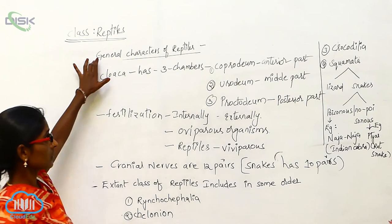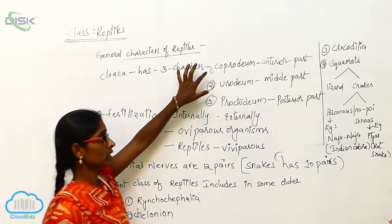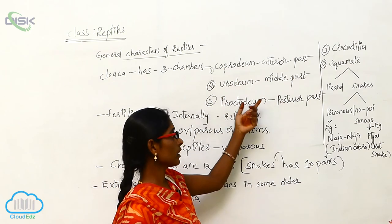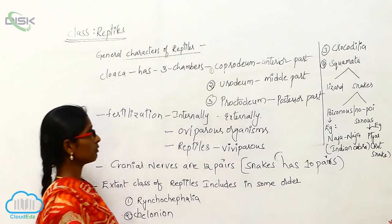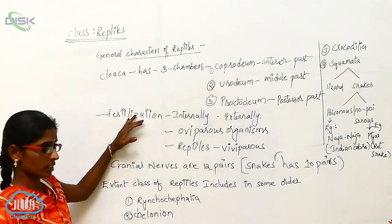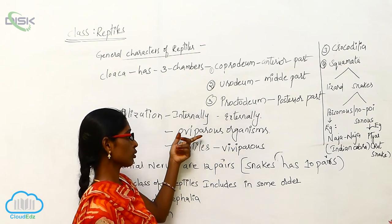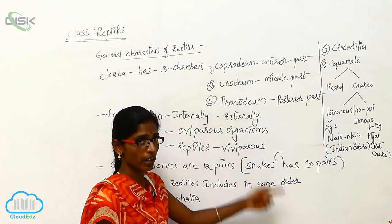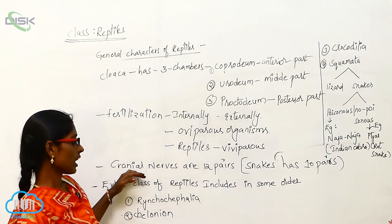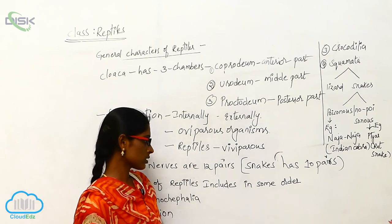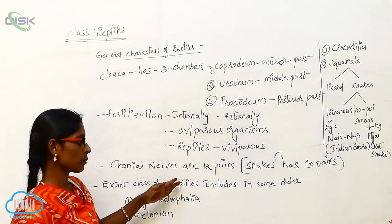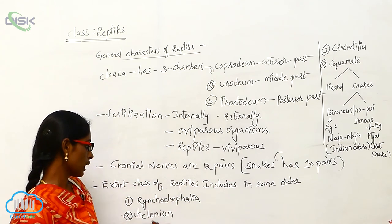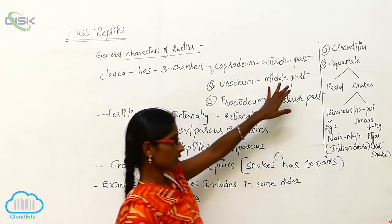General characters of reptiles: cloaca has three chambers — coprodeum (anterior part), urodeum (middle part), and proctodium (posterior part). Fertilization is internal as well as external. These are mostly oviparous organisms and some reptiles are viviparous. Cranial nerves are 12 pairs but snakes have 10 pairs. Extant classes of reptiles include Rhynchocephalia, Chelonia, Crocodilia, and Squamata.